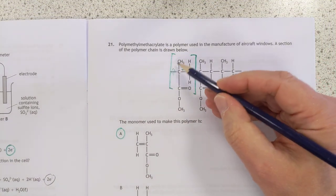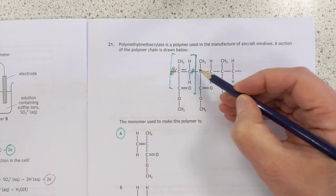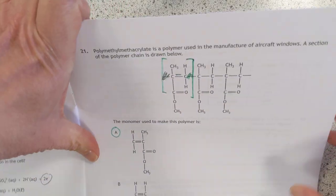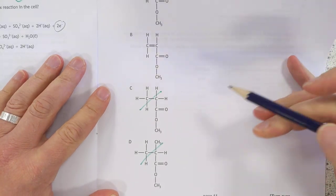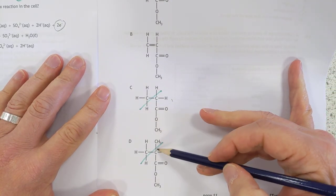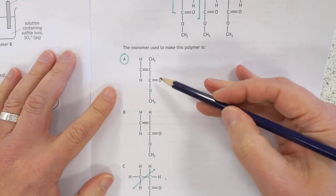21. Polymers. There is the repeating unit. Scrub these bonds away. Pop a double bond here. And you end up with the answers. Now these two answers, I instantly threw it. Because I've only got a single bond in the middle of the molecule.